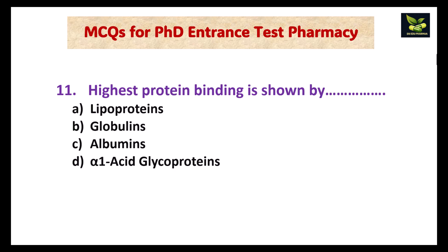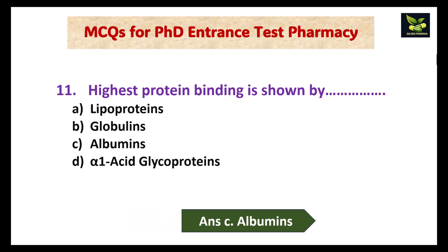Highest protein binding is shown by which of the following? Options: lipoproteins, globulins, albumins, or alpha-1-acid glycoproteins. The answer is C, that is albumins.